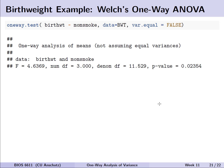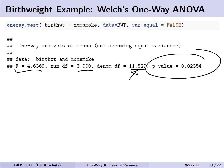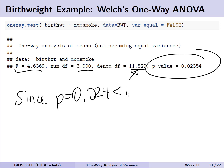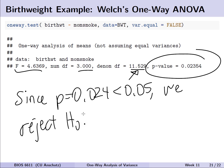Using the oneway.test function with var.equal equals FALSE, we get the Welch's one-way ANOVA output. We see a critical F-statistic, and now the degrees of freedom are different from before — the denominator has a fractional component based on Welch's complex equation. Since p equals 0.024 is less than 0.05, we reject H0 and conclude that at least one group has a different mean birth weight compared to the others.